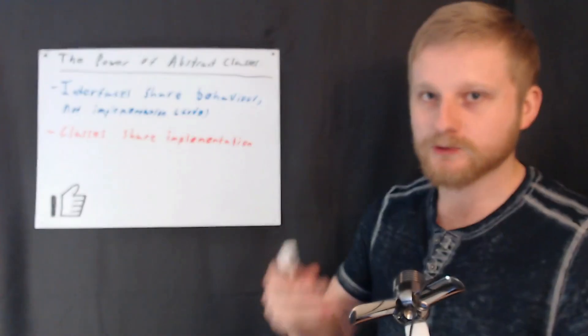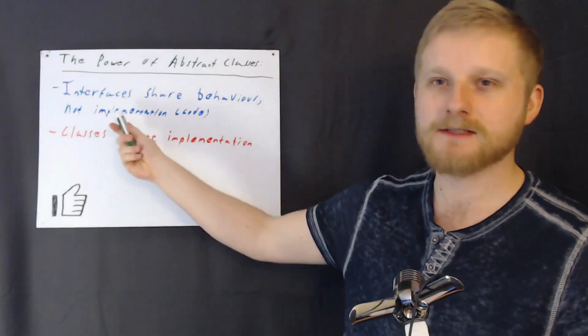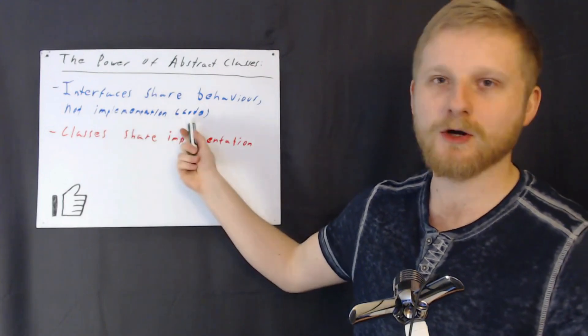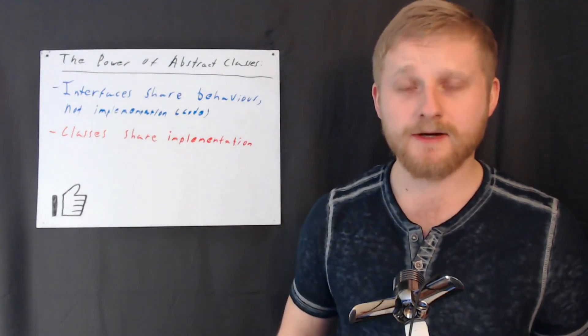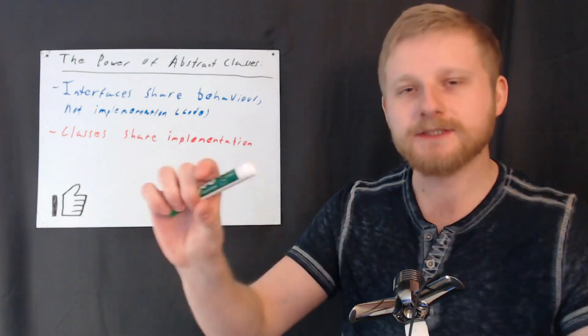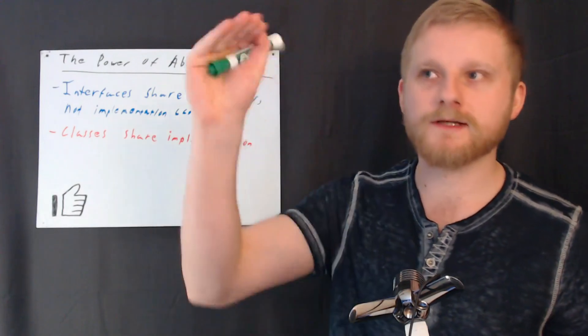The actual body of the method or function, we tend to call that the implementation, and implementation is basically like a pseudonym for code, one of the ways you can think about it. So that's when you would require an interface, is when you don't actually need to share the code, but just the function signature between a set of objects.